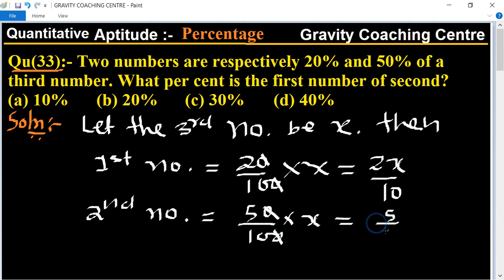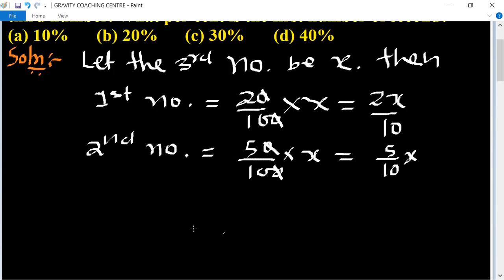5 upon 10 x. So what percent is the first number of second number? Therefore, required percent equal to the first number, which is 2x upon 10, upon 5 upon 10 x, into 100.